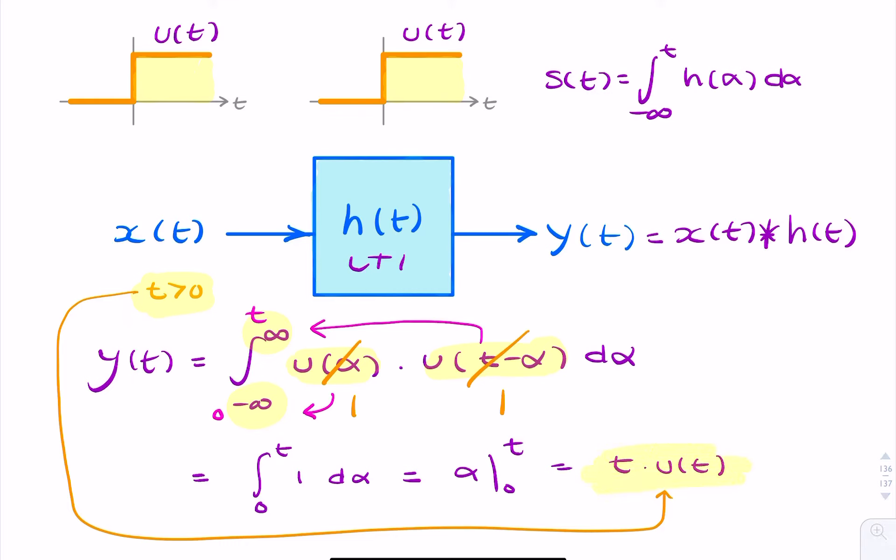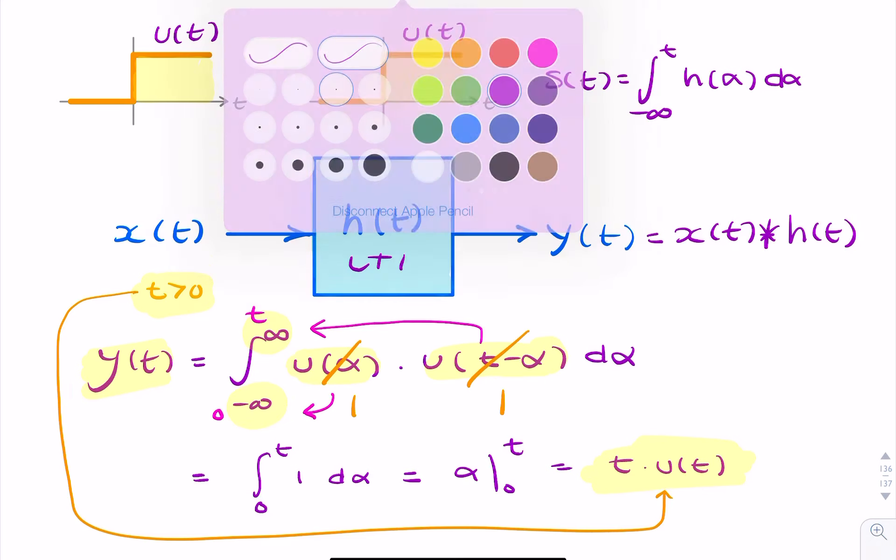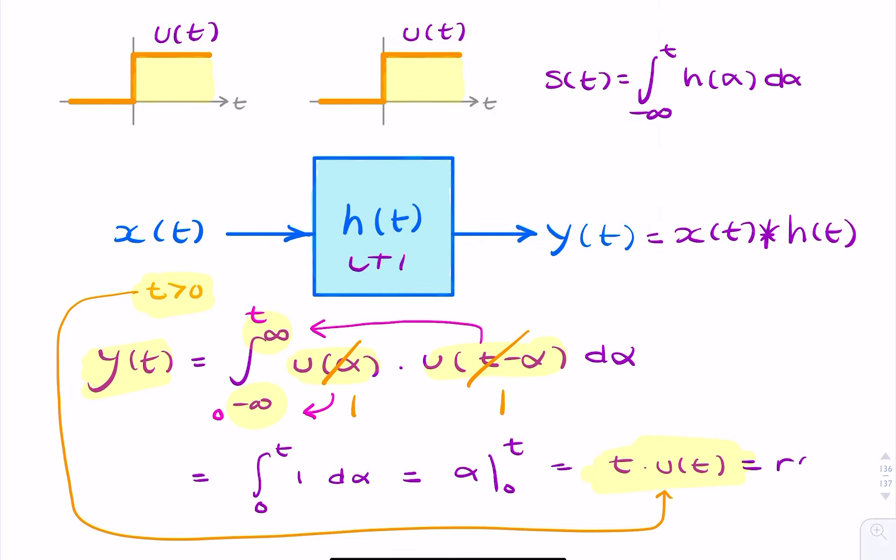So we've just found the output. Now, that's the final answer. That's the output. It's T U of T, or another way of writing that is just to say a ramp function, R of T. And we found this by calculating the convolution. So we convolve the input with the impulse response.